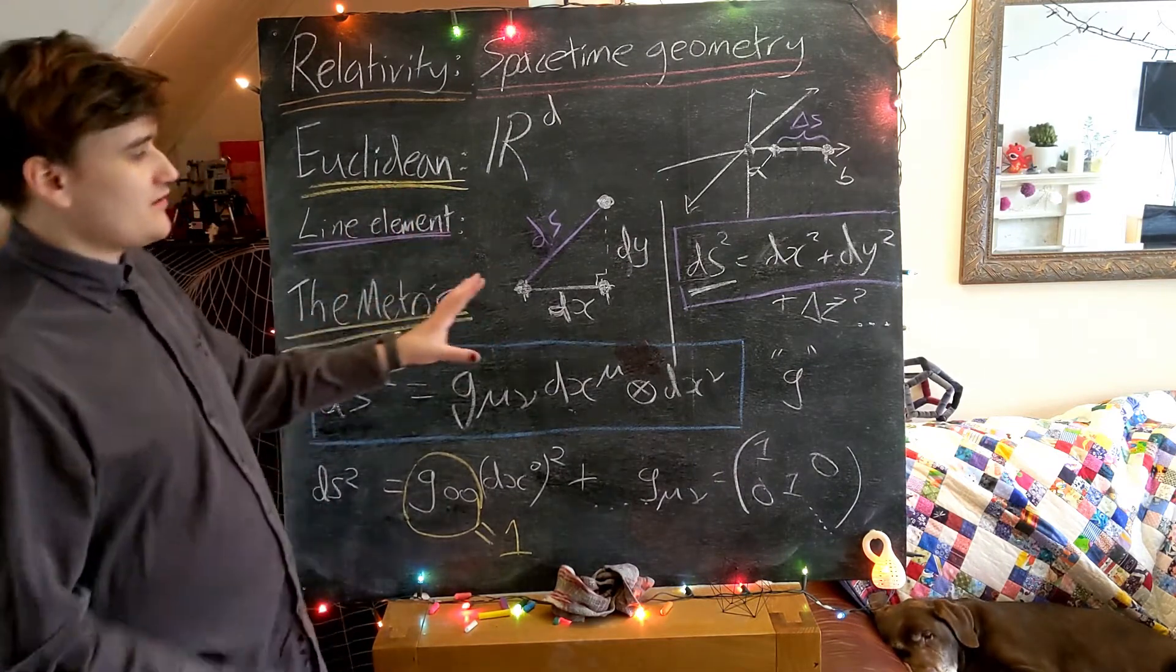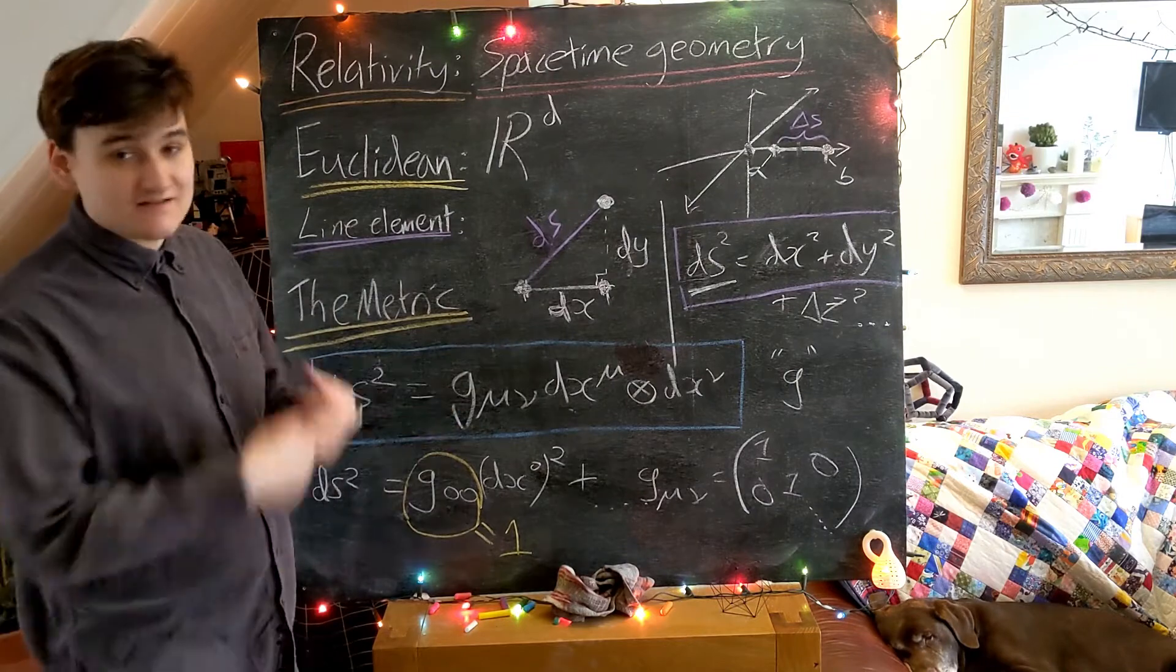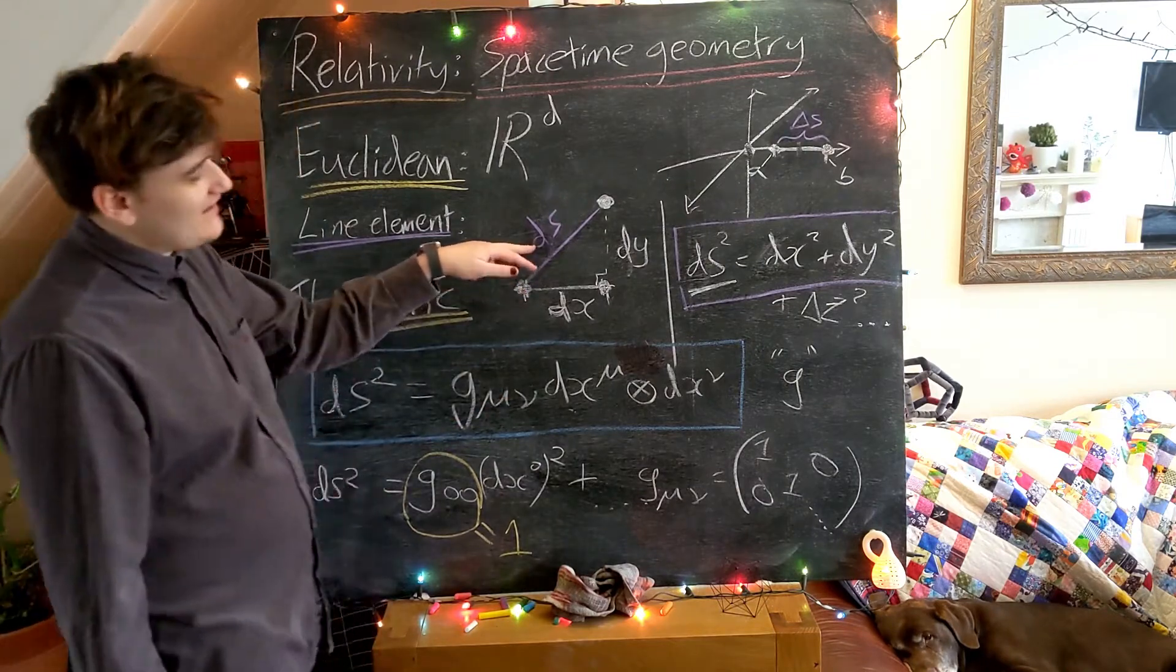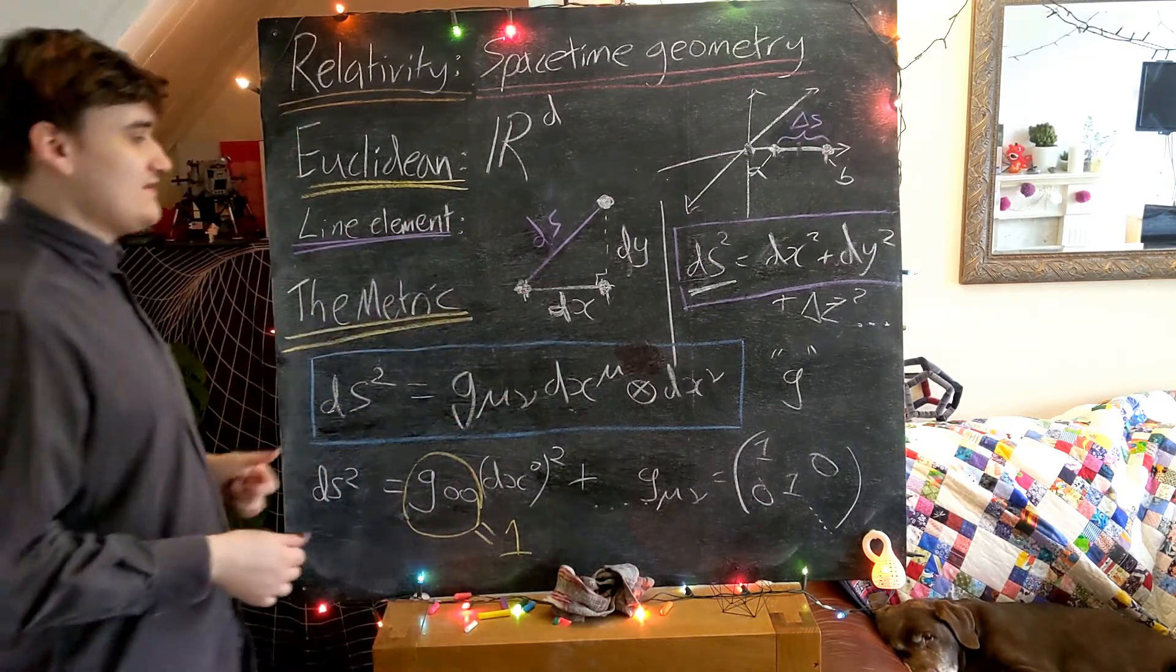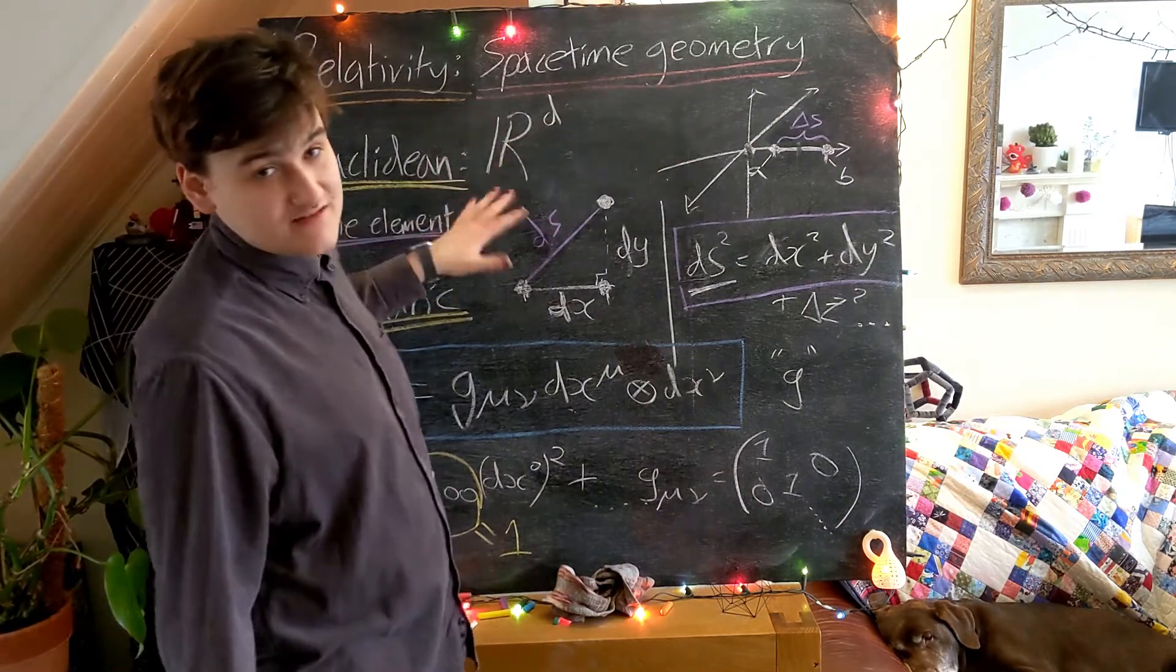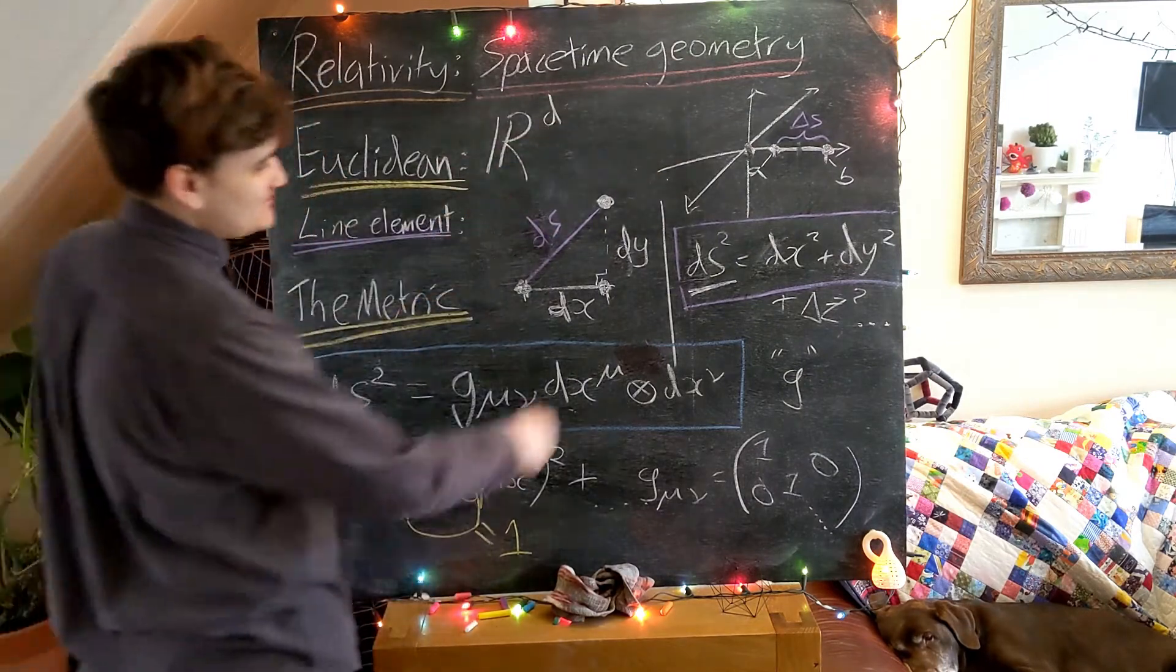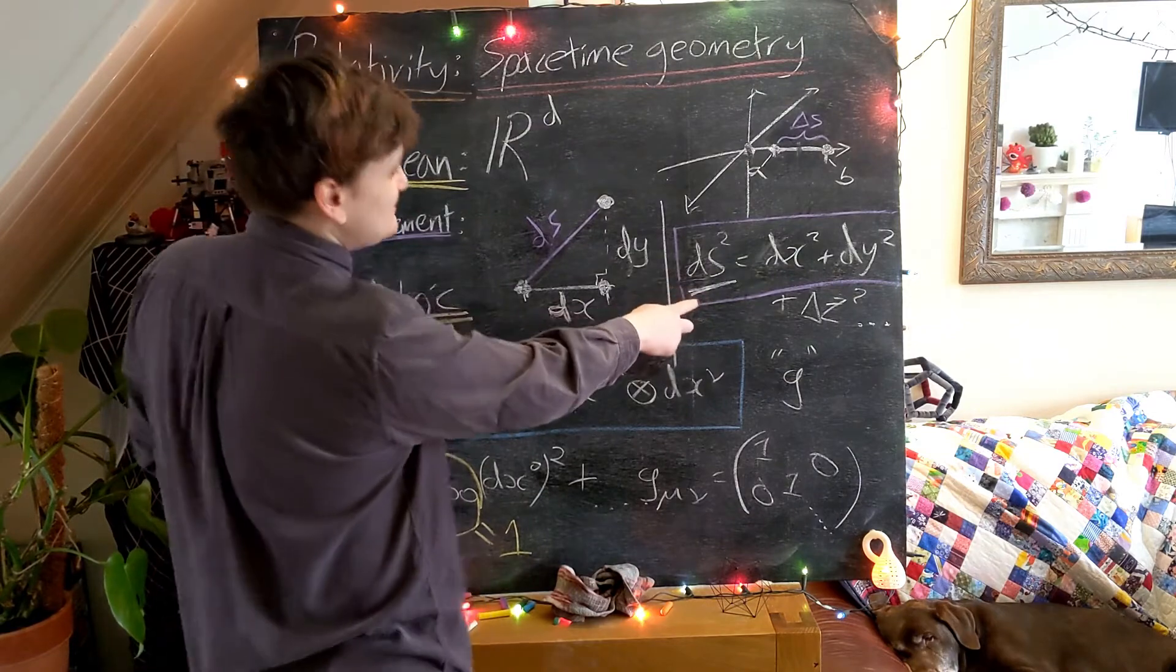And then we saw how we can go from finite intervals, delta s, to the infinitesimal interval, ds. Just fairly naively replacing delta with d. And that gives us this definition of this infinitesimal line element.